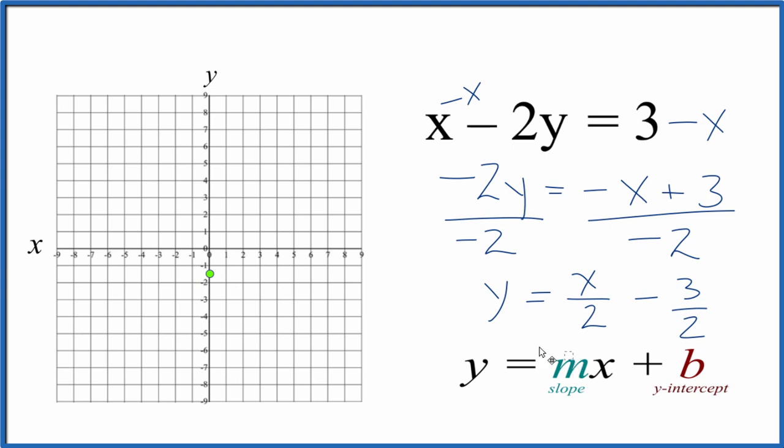For our slope here, what we could do is call this 1x over 2. It's still x over 2, we just put a 1 there, because now we can call this rise over run.